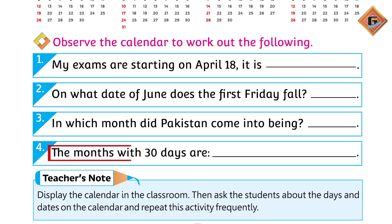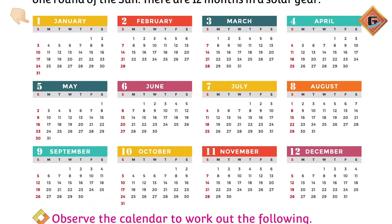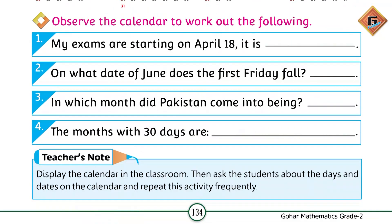The months with 30 days are: if you look at all the months, in which month is the last date written as 30? January is 31, February is 28, March is 31, April is 30 — we will write April. May is 31, June is 30 — next month is June. July is 31, August is 31, September is 30 — we will write September. October is 31, November is 30 — we will write November. December is 31.